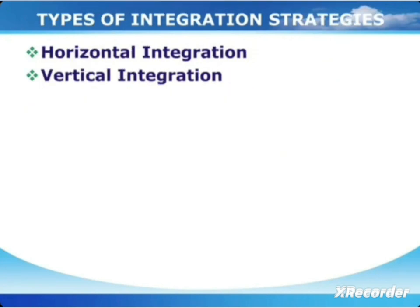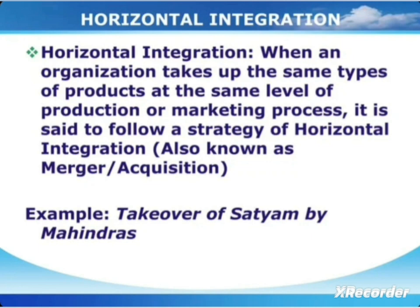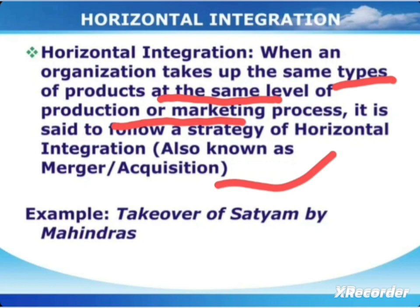Integration is of two types: horizontal integration and vertical integration. Horizontal integration takes place when the same types of products at the same level of the production or marketing process are combined — through merger or acquisition. For example, if two companies are both in retailing, they come together and work as a single business. It is same-level integration for the same product or market.